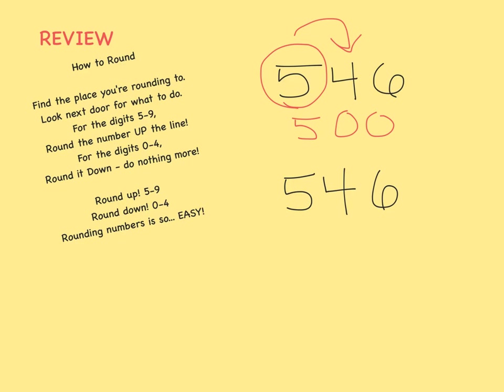Now let's round 546 to the nearest tens place. Find the place you're rounding to — the tens place. Look next door for what to do. For the digits 5 through 9, round the number up the line.